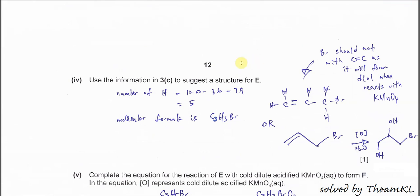Part 4, use the information in 3C, suggest a structure for E. First we need to find the hydrogen number, which is 120 minus 36, 3 carbon and 1 bromine, so we get 5 hydrogen. Molecular formula C3H5Br. So we can roughly deduce the structure now. Three carbons, as it's given in the question, and it has one double bond. So we put the bromine on the last carbon, so here going to form diol with KMnO4. So therefore the structure roughly looks like this. After that, this one will oxidize to form this diol.